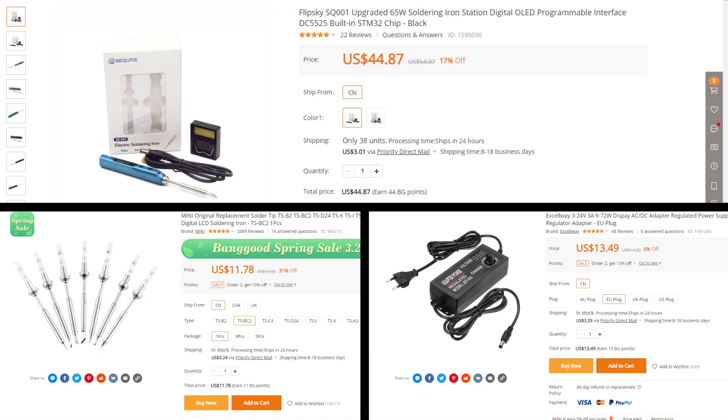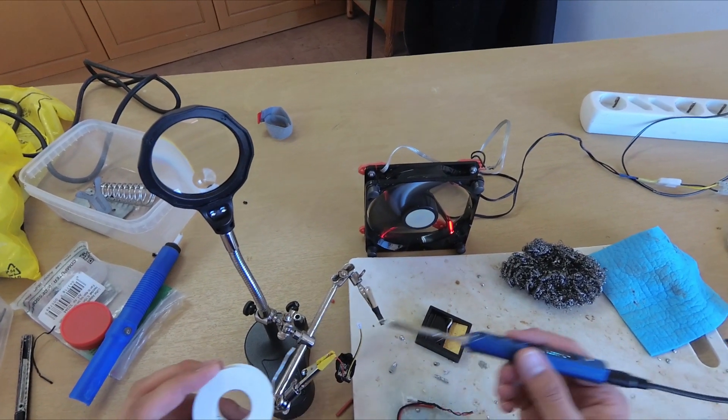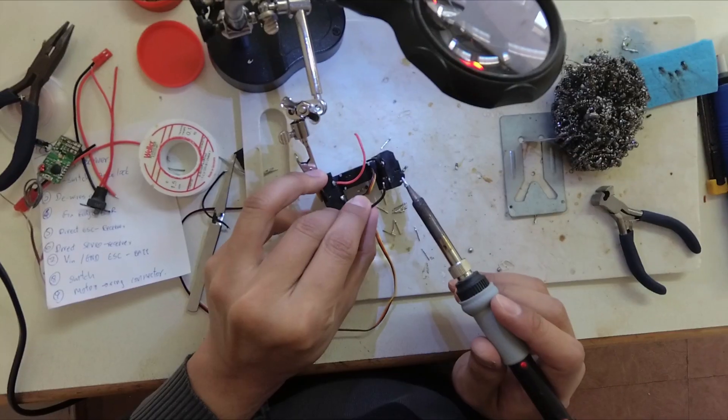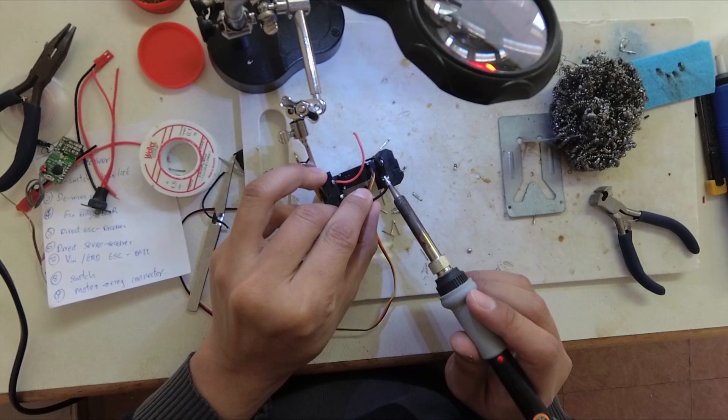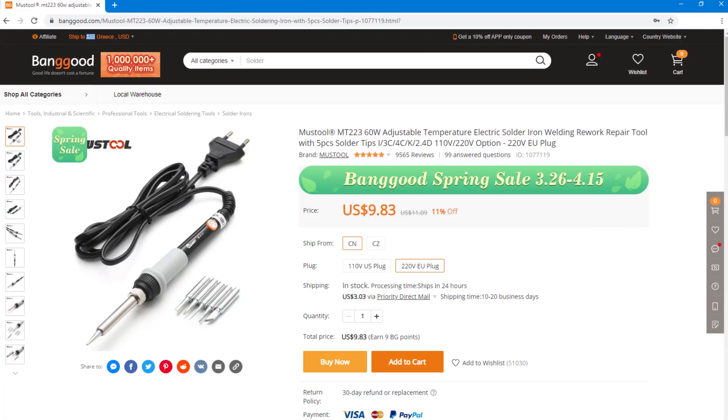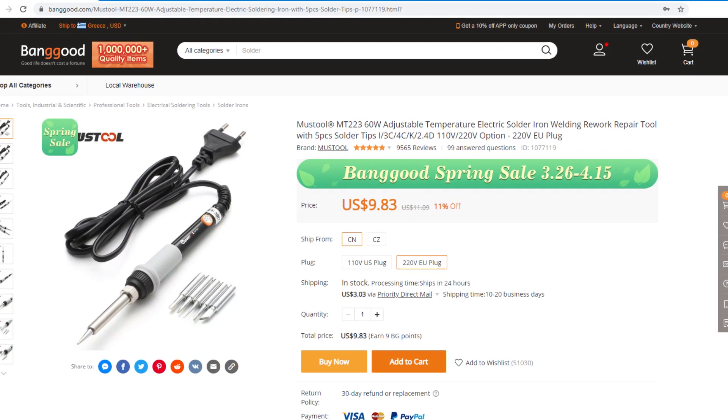So for a complete station you are looking at around $70 for the iron, a tip and a 24V power supply. I know it is a bit expensive but really everyone should have one of these. However, if this is too much for you, there's also a budget soldering iron that I have been using before I got this TS-100. It costs $10 and it is perfect if you want to learn soldering without spending too much.